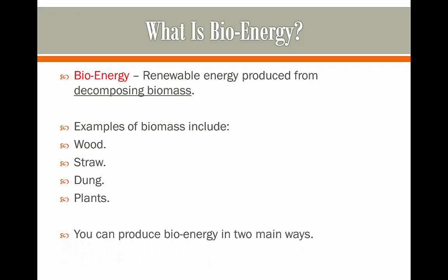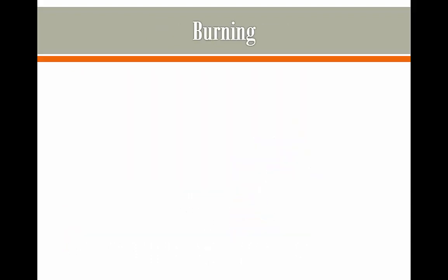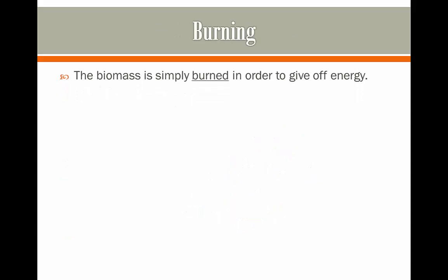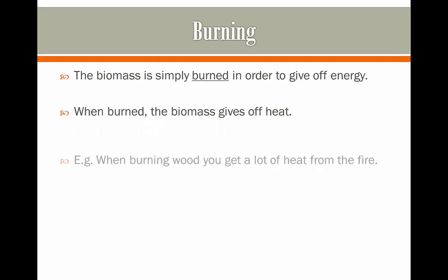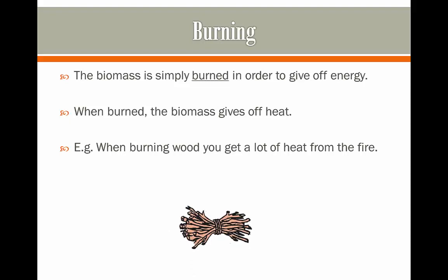You can produce bioenergy in two main ways. The first is by burning biomass — it is simply burned in order to give off energy in the form of heat. When burning wood, for example, you get off a lot of heat from the fire and that can be used for cooking typically.